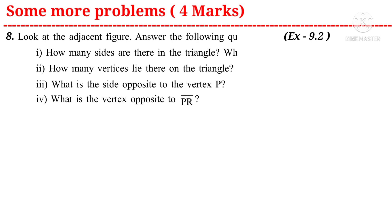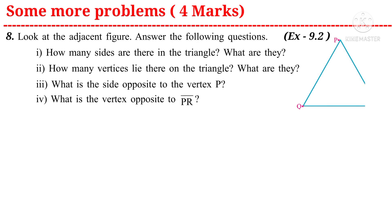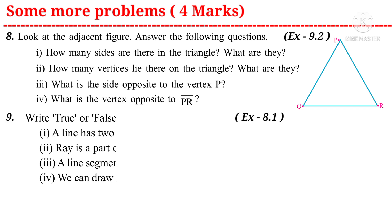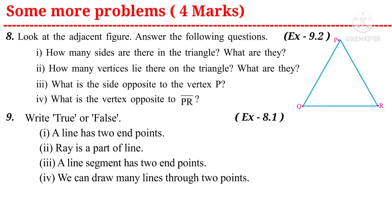Question eight: look at the adjacent figure of a triangle and answer the following — (1) how many sides are there in the triangle and what are they? (2) how many vertices lie on the triangle and what are they? (3) what is the side opposite to vertex P? (4) what is the vertex opposite to side PR? — a question from the ninth chapter.